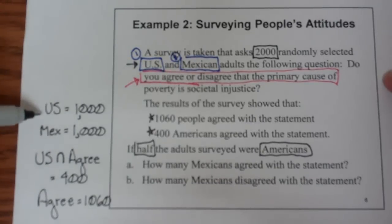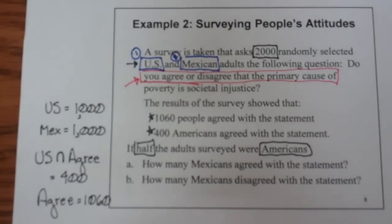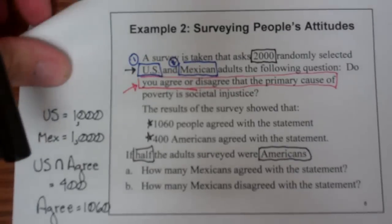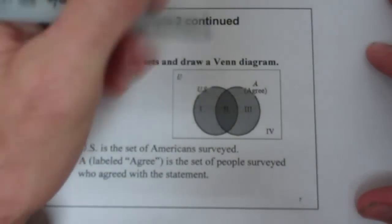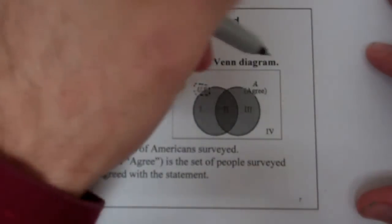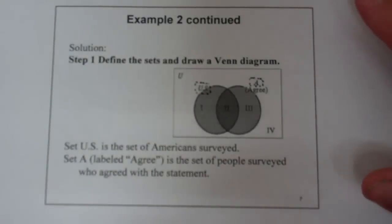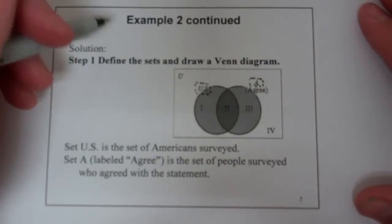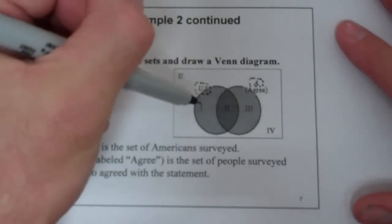We have the number of Mexicans and the number of U.S. — those are our two sets — and we're looking to put agrees in each of those sets. We need to draw a Venn diagram. The set U.S. is the set of all Americans surveyed, and the set A is the set of people surveyed who agreed with the statement. The book has chosen to use U.S. and agree as the two sets, so we'll define them consistently with that.